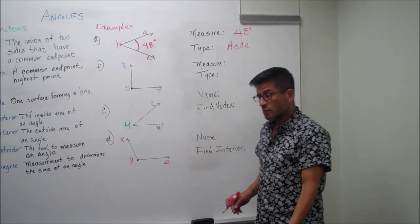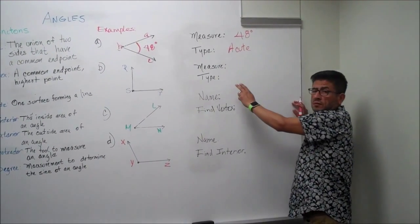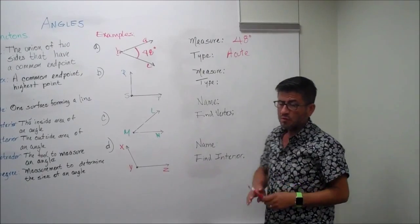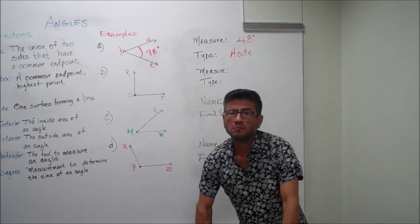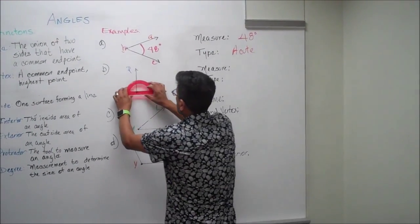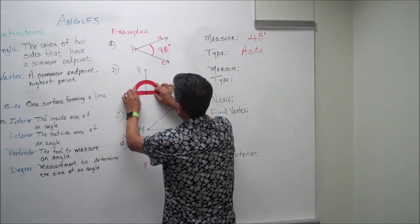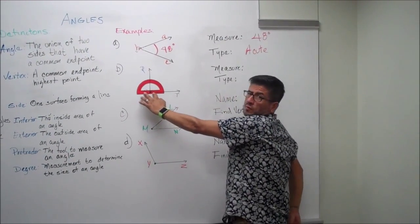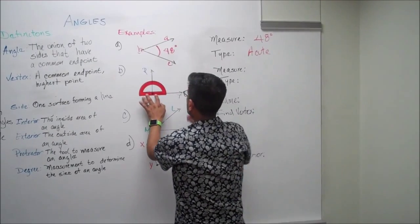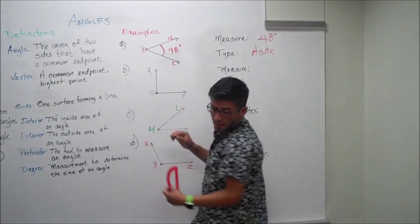Let's go to the next one. Example B is asking us again to measure the angle. We'll use our tool. You put it on the angle again on the vertex, set it up correctly, just the way it looks right here. And it should be a 90-degree angle.